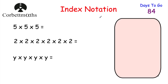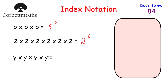Today we're looking at indices, and just before we get started I want to make sure you're confident with index notation — what the power means and how to type it in your calculator. So if we had 5 × 5 × 5, that's 125, or another way to write it is 5 cubed because you've got three fives multiplied together. 2 multiplied by itself six times is 2 to the power of 6, and y multiplied by itself four times is y to the power of 4. That's how you write things in index form.